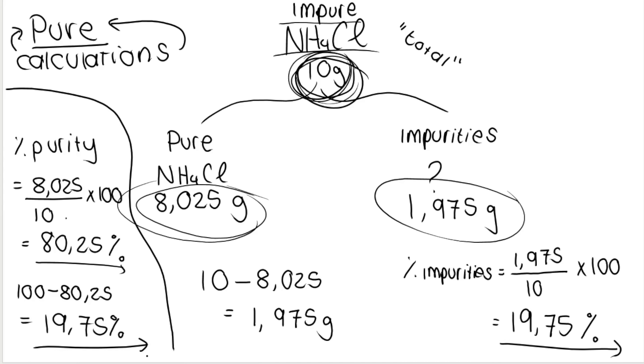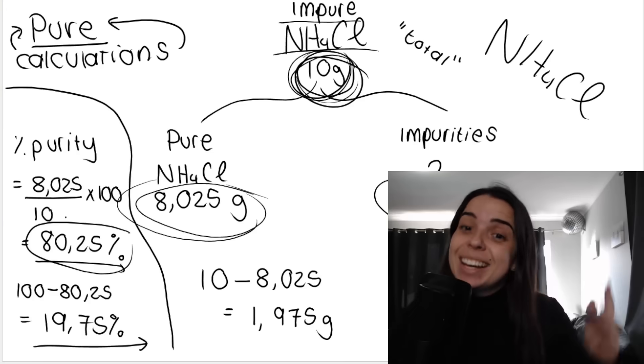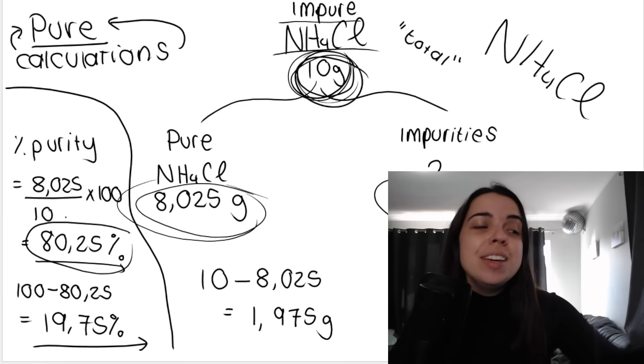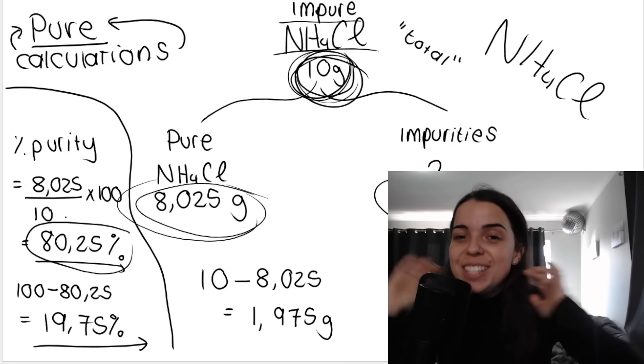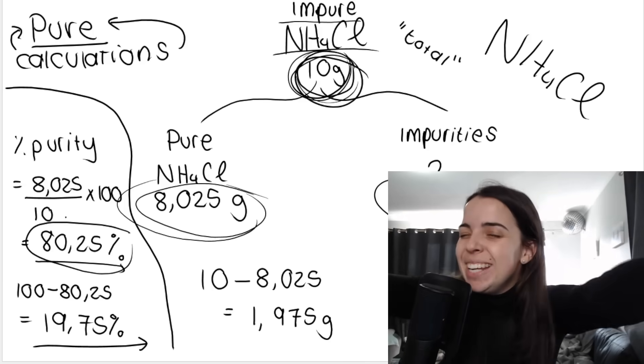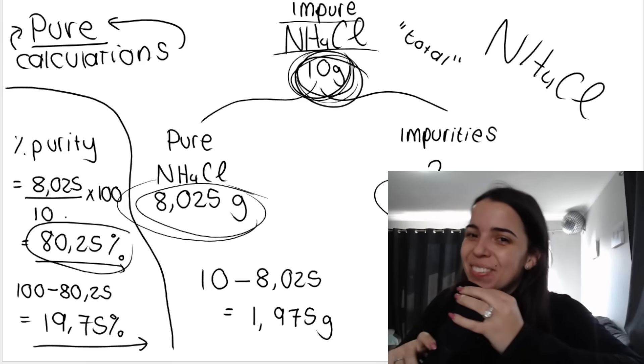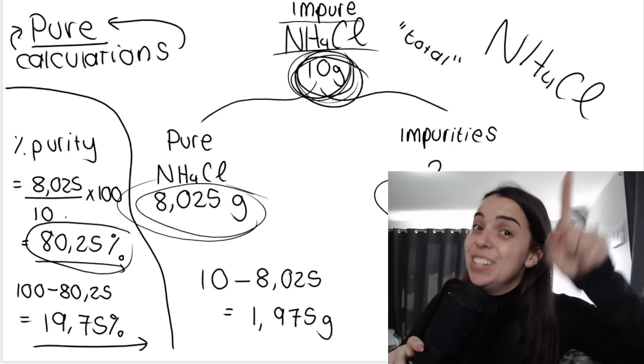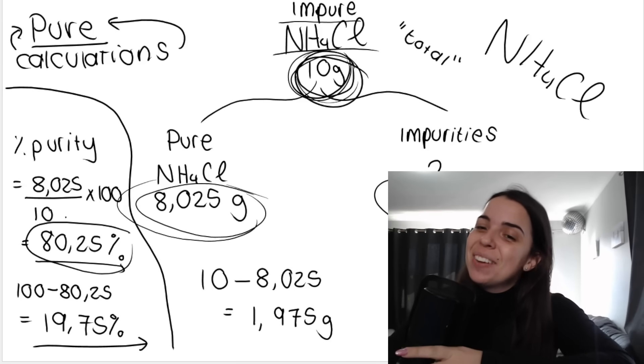Just like that. There we go. So basically, just over 80% of NH4Cl is actual, pure NH4Cl. The other almost 20% is impurities, is rubbish, is dirt, is other substances. I hope that was helpful. Check out other acids and bases past paper questions linked in the playlist in the description box. And please subscribe if you haven't subscribed yet. I'll see you in another lesson very soon. Bye, everybody.